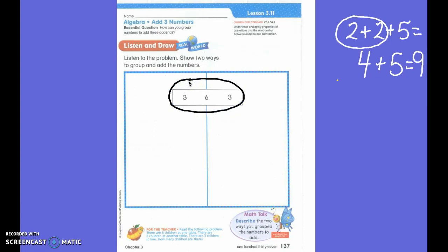There are 3 children at one table, do you see the table? There are 6 children at another table, do you see that table? There are 3 children in line, do you see the 3 children in line? Okay, how many children are there? So I want to know how many are all together.